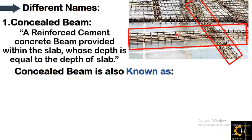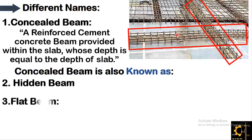Concealed beam is also known as a hidden beam, since once the slab is poured one cannot have any idea where it lies. It is also called a flat beam, and a slab beam, since it lies within the slab. So hidden beam, flat beam, and slab beam are all different names for the same thing.